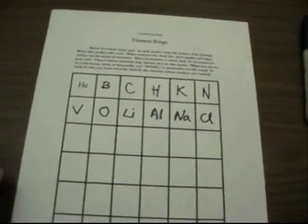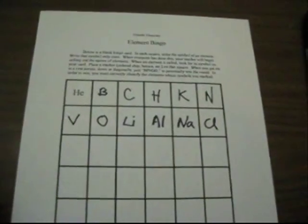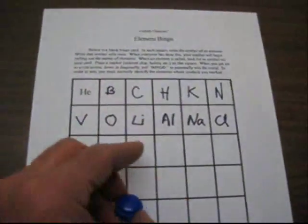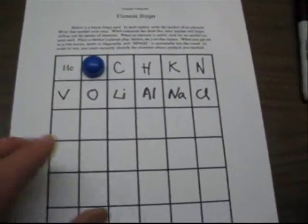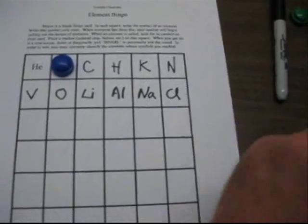So for example, if you were to call out boron, this student will look across his card and say, ah, I've got a B. That's the symbol for boron. And let's say the next one you call out would be aluminum.